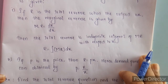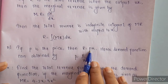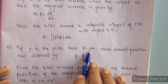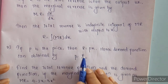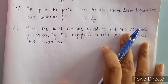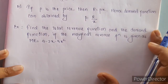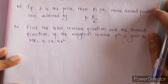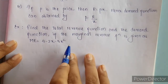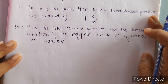Now, total revenue is nothing but price into output. So we can find the demand function, that is P, using R divided by X. Let us look at this example. We have to find the total revenue function and the demand function if the marginal revenue function is given as 4 minus 2X minus 3X squared. Using this marginal revenue we have to find both the total revenue and the demand function.